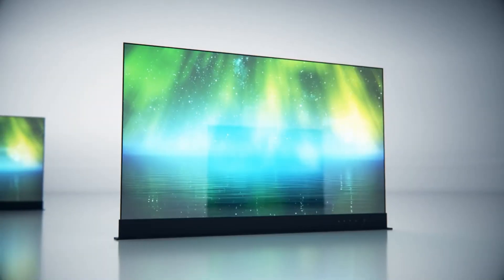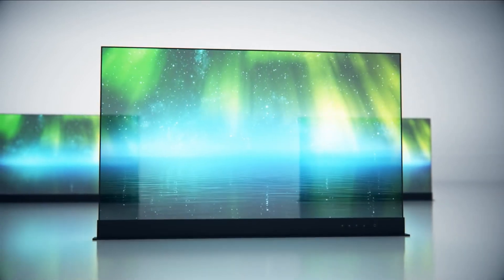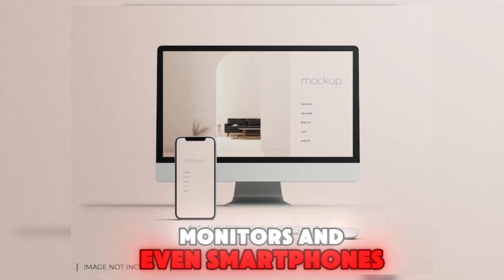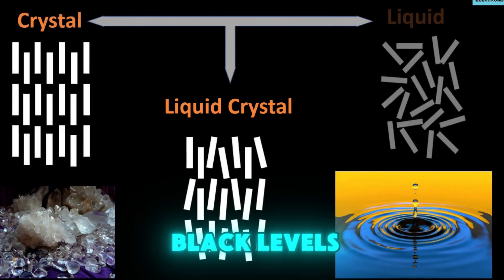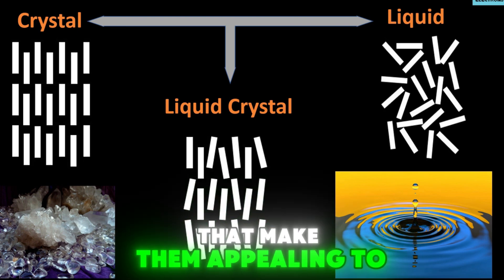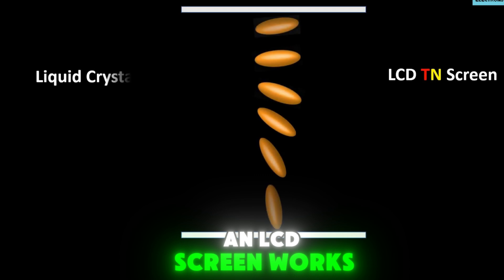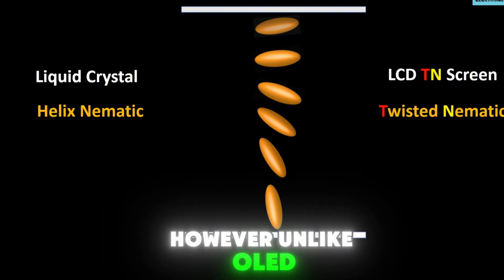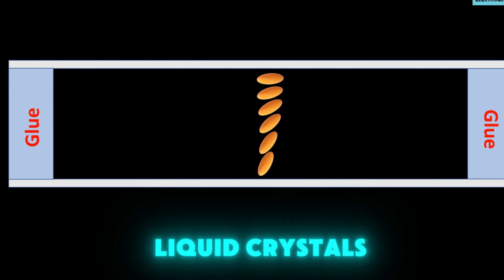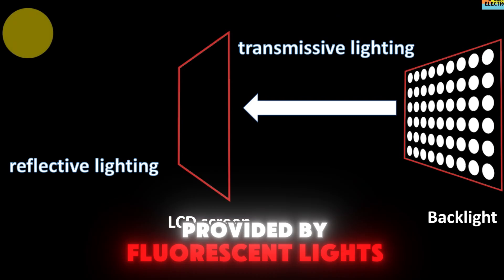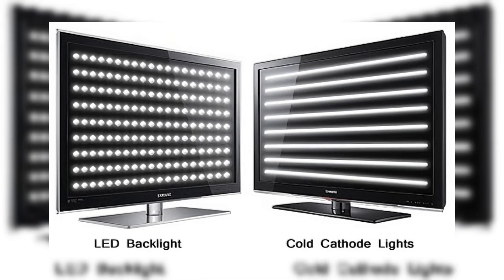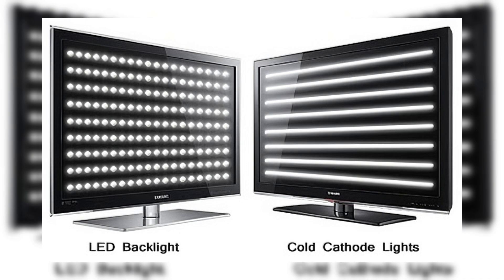What is LCD? Let's move on to LCD, or liquid crystal display. LCDs are the most common type of display technology found in televisions, computer monitors, and even smartphones. An LCD screen works by passing light through liquid crystals, which act as a filter to create images. Unlike OLED, LCD panels require a backlight to illuminate the liquid crystals. Traditionally this backlight was provided by fluorescent lights, but modern LCDs typically use LEDs — light-emitting diodes — for better energy efficiency and brightness. As a result, you'll often see the term LED-LCD used to describe these displays.